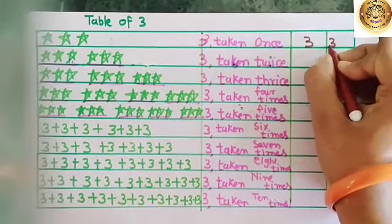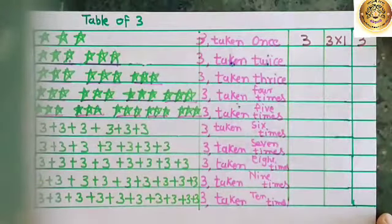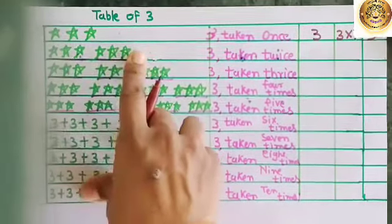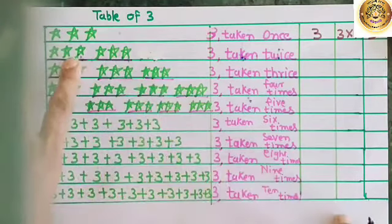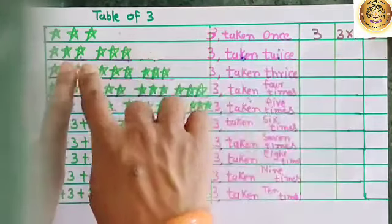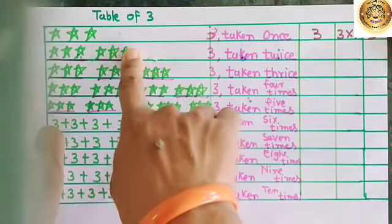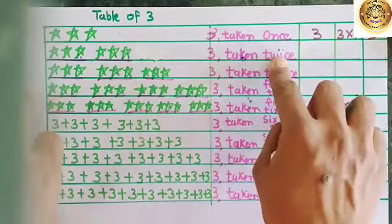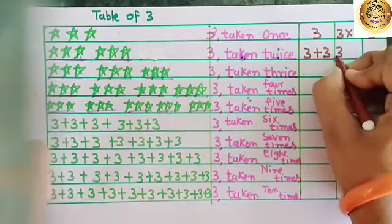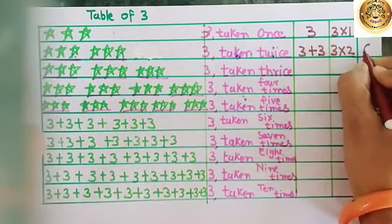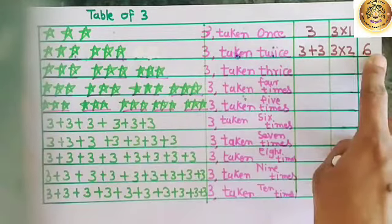What is the multiplication form? 3 ones are 3. Now here, we have 2 groups of 3 stars. I will not count 3 two times separately. What I will do is count forward from 3 — that is, 4, 5, and 6. So if you have taken 3 twice, that means 3 plus 3. In multiplication, we write 3 two times. What is 3 2s are? 6. After 3, we count 4, 5, 6. So 3 2s are 6.